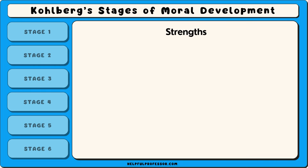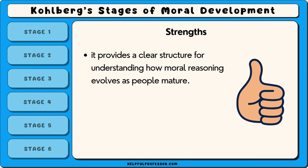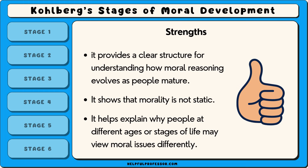One strength of Kohlberg's theory is that it provides a clear structure for understanding how moral reasoning evolves as people mature. It shows that morality is not static, and that individuals develop more sophisticated ways of thinking about right and wrong over time. The theory also helps explain why people at different ages or stages of life may view moral issues differently.